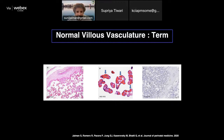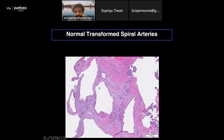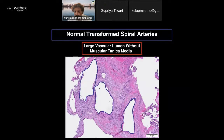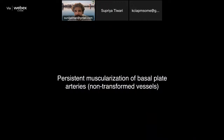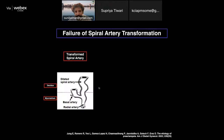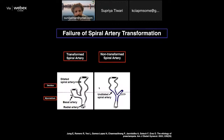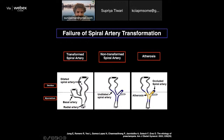These are basal spiral arteries — large vascular lumina without muscular tunica media, representing transformed spiral arteries. A cartoon shows how transformation occurs: these are dilated transformed spiral arteries versus the undilated non-transformed (blue) spiral arteries. The basal artery and radial artery are shown. When this lesion progresses, it becomes atherosis where the lumen is occluded.